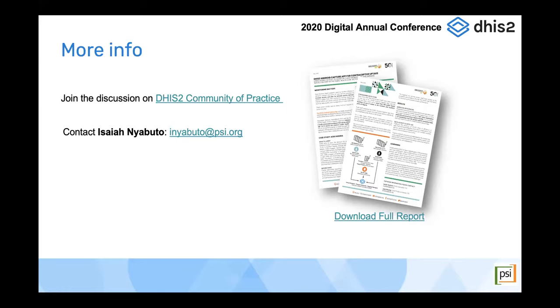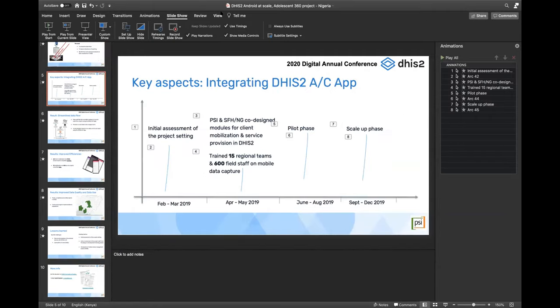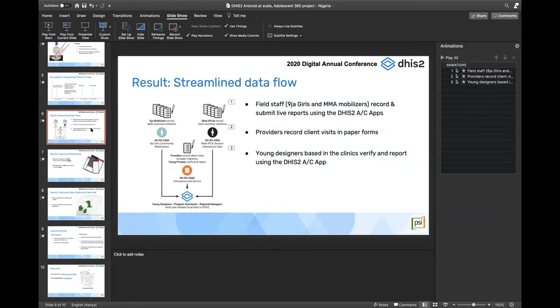We saved a couple of minutes for live questions. One question from Kala Hedberg was about the transmission link mapping, supporting links between TEIs, enrollments, and events in the different programs. Is there anything you could say about the links between the TEIs, enrollments, and events?